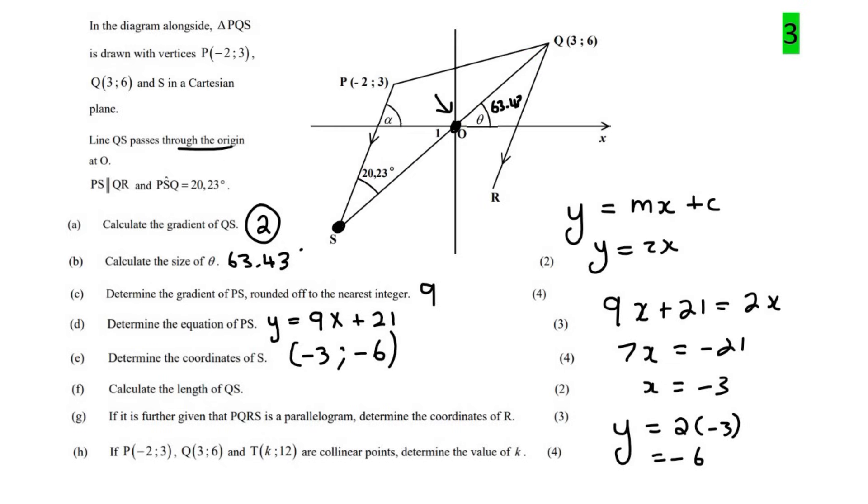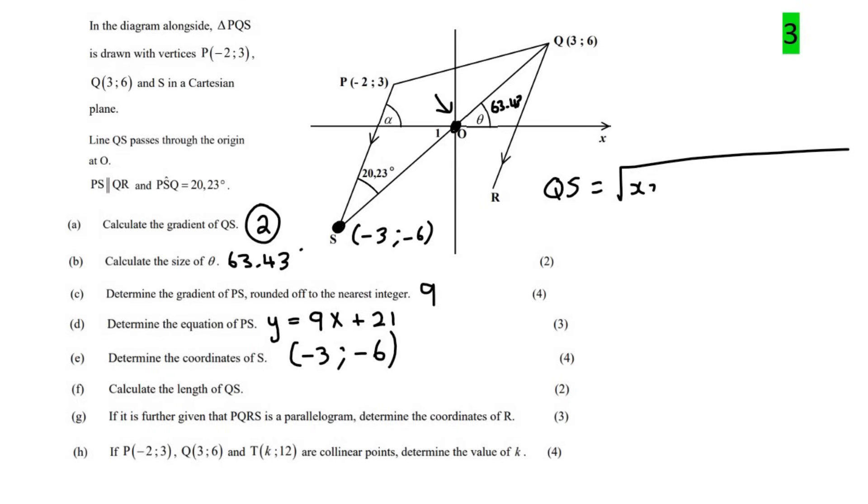The next question. Calculate the length of QS. Now we've already got S's coordinates. And we have Q's coordinates, so that's quite easy. And so to find the length, we could use the distance formula. And so that would be 3 minus minus 3 and 6 minus minus 6. And if you had to go type that all in, it gives you 6 square root 5, which if you round to two decimals will be 13.42.